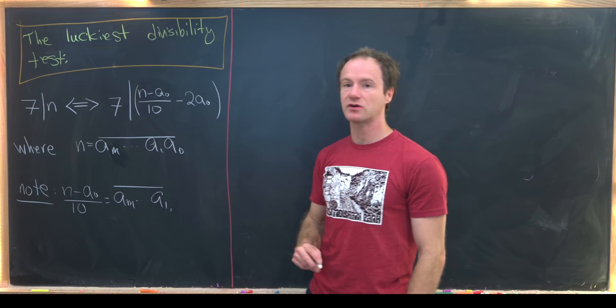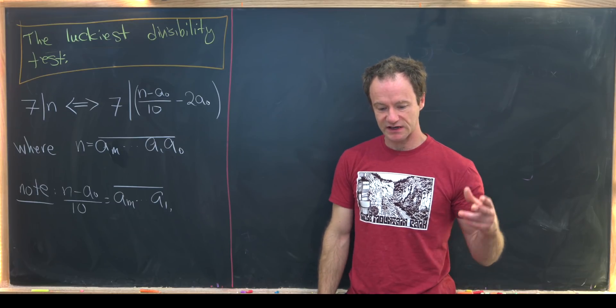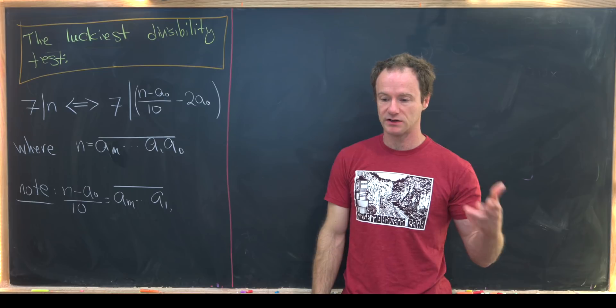So this process here creates a smaller number which is actually very nice because we can continue creating smaller and smaller numbers until we have something that's obviously divisible by seven.